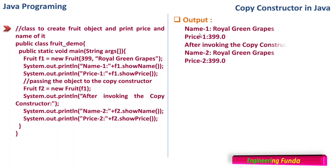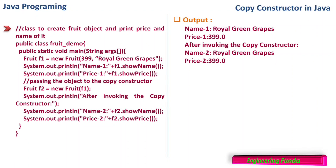Here is the output. Name1 is equal to Royal Green Grapes — that is the name given — and price1 is equal to 399. After invoking the copy constructor, name2 from f2.showName() gives the same name Royal Green Grapes, and price2 is also 399.0 because it is of type double. The name and price of the second object are the same as the first.